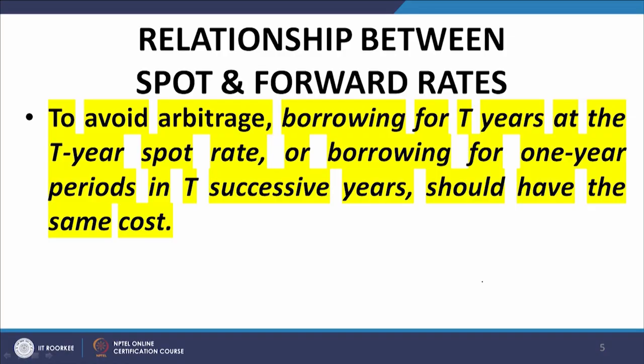Let us now look at an arbitrage-free relationship between spot rates and forward rates. To avoid arbitrage, borrowing for t years at the t-year spot rate, or borrowing for one-year periods in t successive years, should have the same cost. In other words, making a deposit for 5 years at t equal to 0 at one stretch, at rate S05, should yield the same outcome as rolling over the deposit from t equal to 0 to 1, then 1 to 2, and so on up to t equal to 5 years.